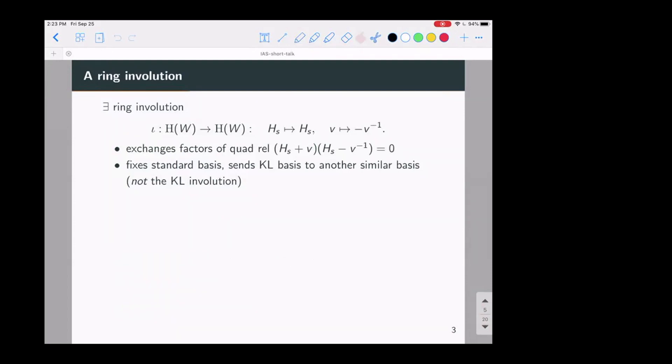Now, I want to talk about Koszul duality, but let me start at the Hecke algebra level again. So at this level, this is just a ring involution of the Hecke algebra. I wrote the quadratic relation in this way. And so you notice that if you send Hs, now s is just a simple reflection of a Weyl group to itself, and V to minus V inverse, then this exchanges the two factors of this relation. And so this defines a ring involution.